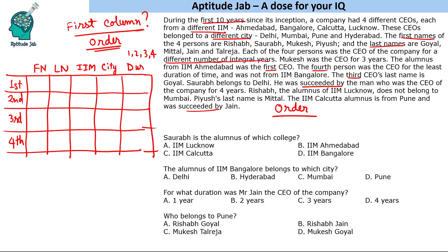Now let us put the direct information. The alumnus of IIM Ahmedabad was the first CEO, so we put IIM Ahmedabad for the first CEO. The fourth person was CEO for the least duration, so the fourth CEO served for one year. The third CEO's last name is Goyal. That is the direct information we have.